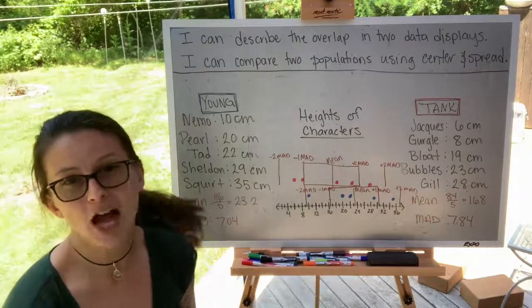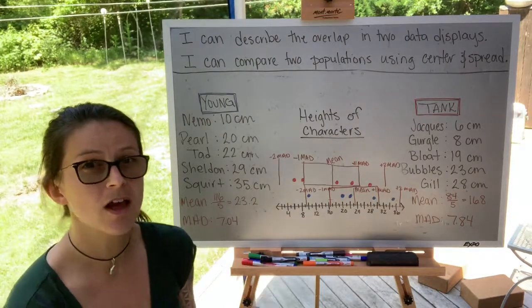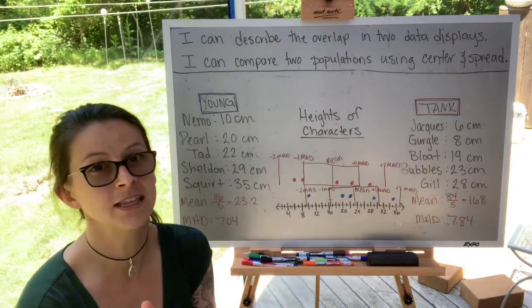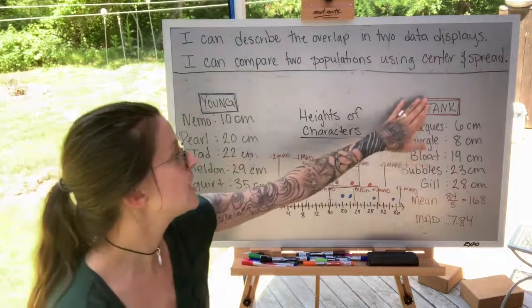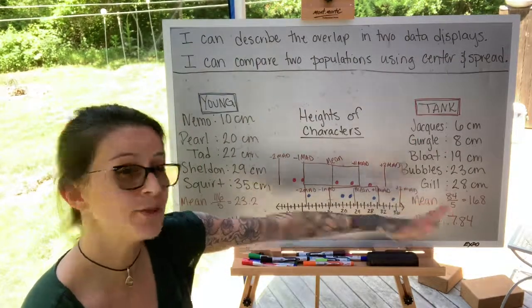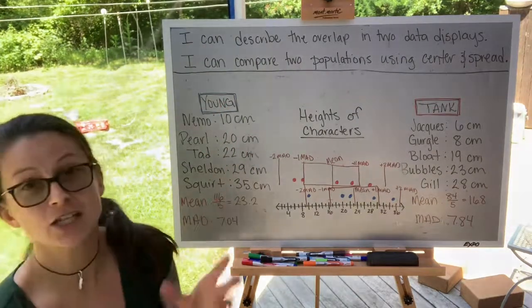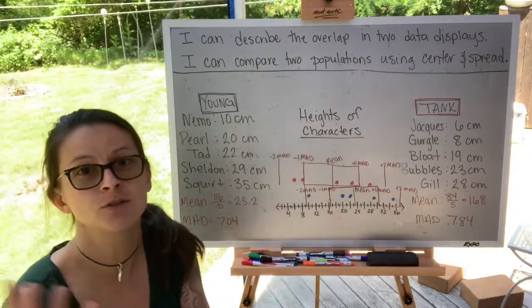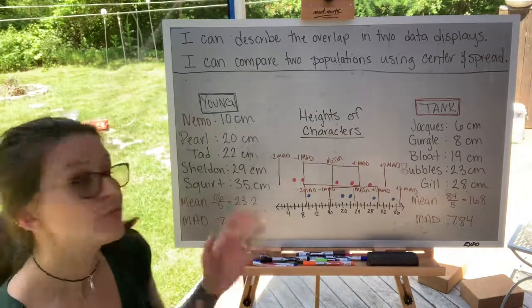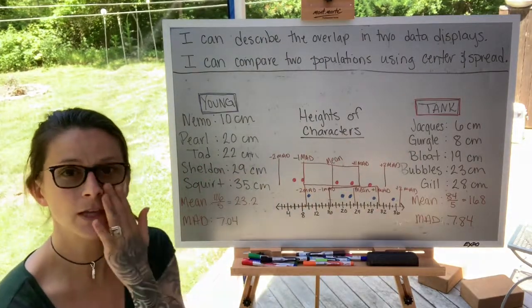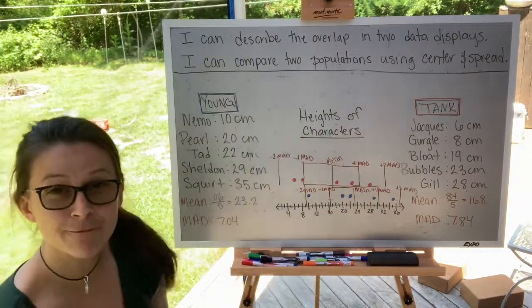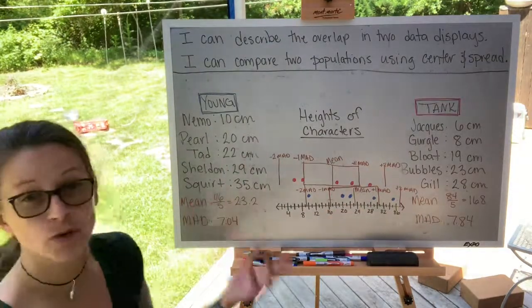Here you see a dot plot of two samples of two populations in the Pixar film Finding Nemo. We have the tank animals and the young animals. For each of these populations, I randomly selected five characters to represent this population. So my sample size is five and I chose them randomly.